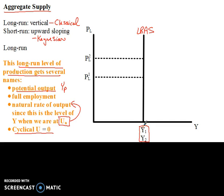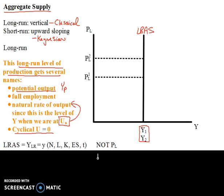Conceptually, the long-run aggregate supply curve is essentially the production possibilities curve. It's just like the production possibilities curve, only now we're putting price on the vertical axis and comparing our production to prices. What we're saying is that our production does not change when prices change. This is the limits of what we can produce with our land, labor, capital, entrepreneurial skills, and current technology. Our long-run aggregate supply — our ability to produce goods and services — is a function of our real resources, not of the price level.